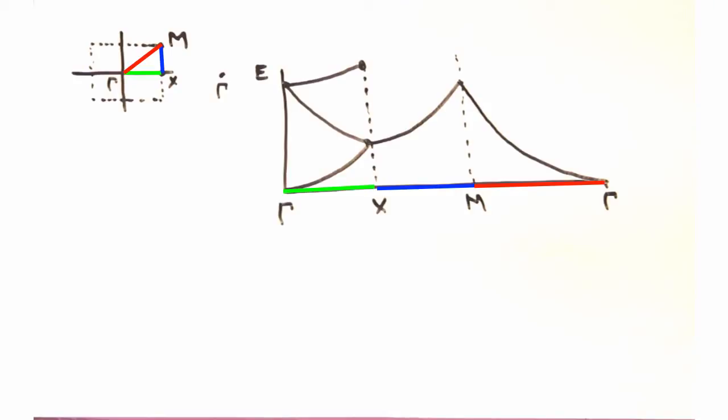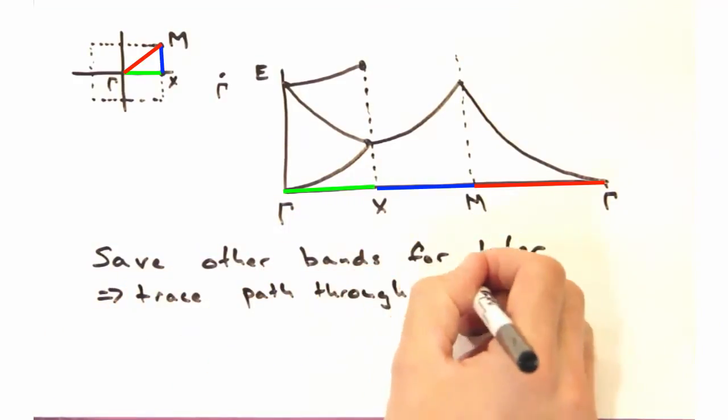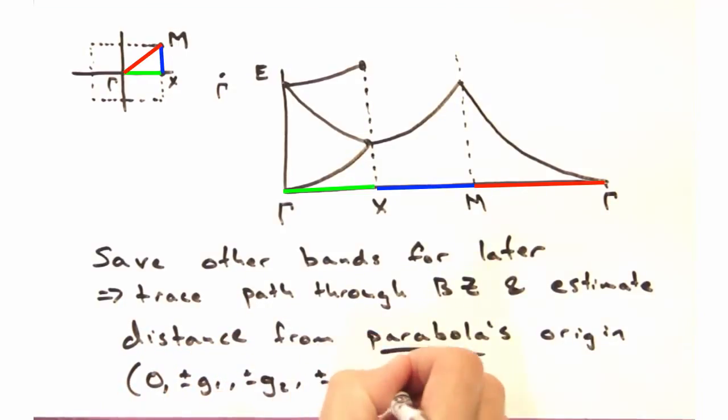What about the other two parabolas? I think this is actually a really good homework problem. So we're going to stop with this example for now. And if you're ever in doubt, trace the path in the first Brillouin zone, and try to get an estimation of whether the distance from your parabola's origin increases or decreases.